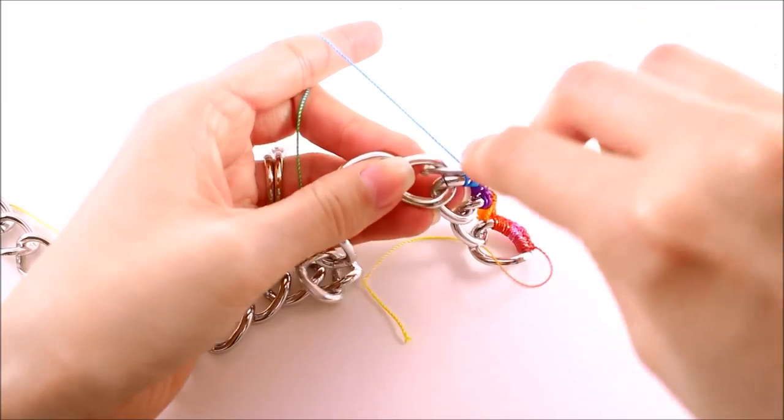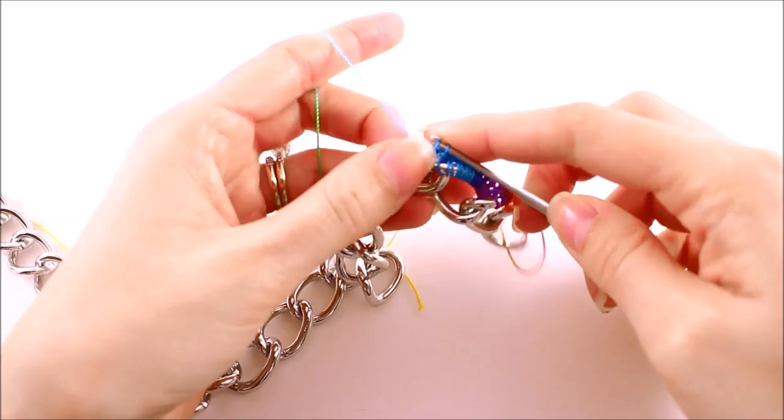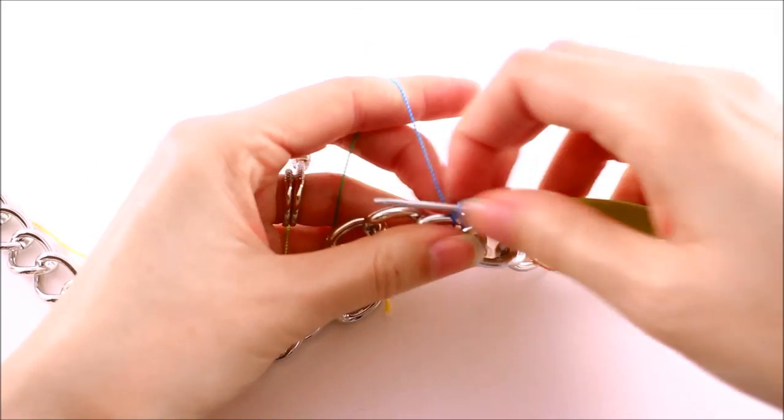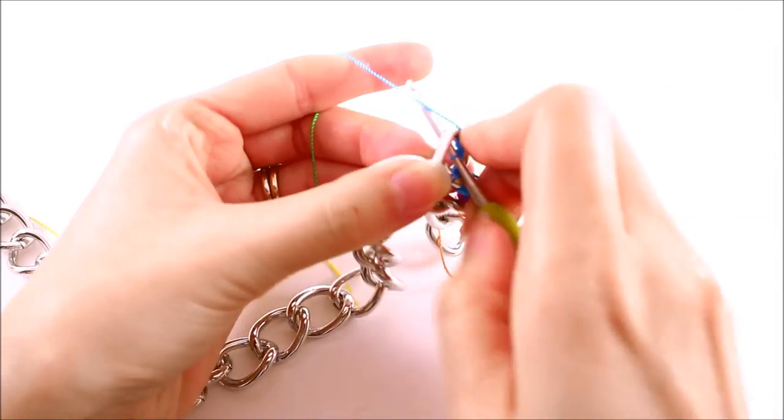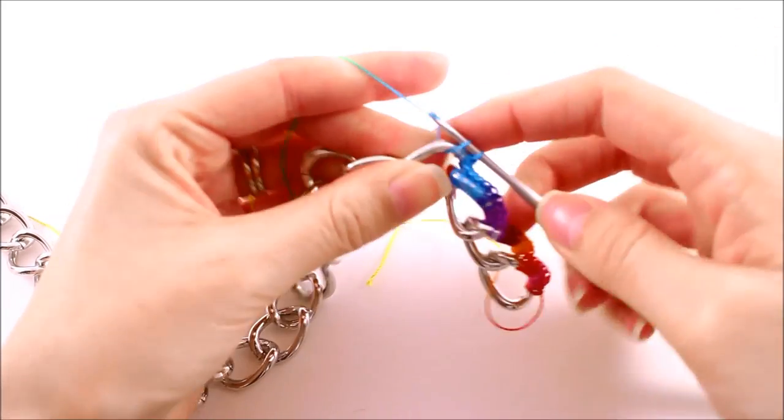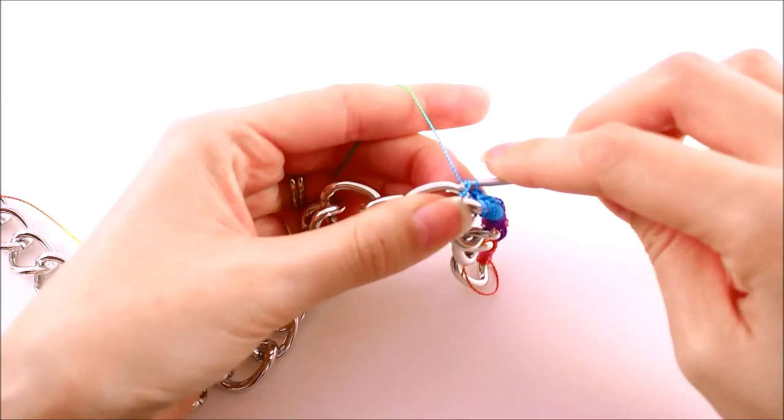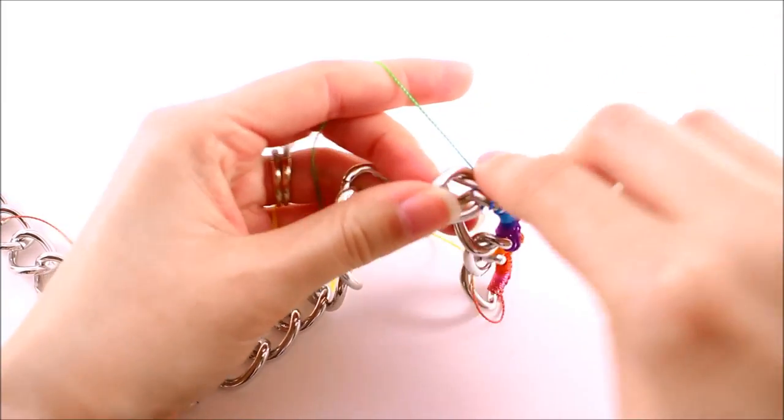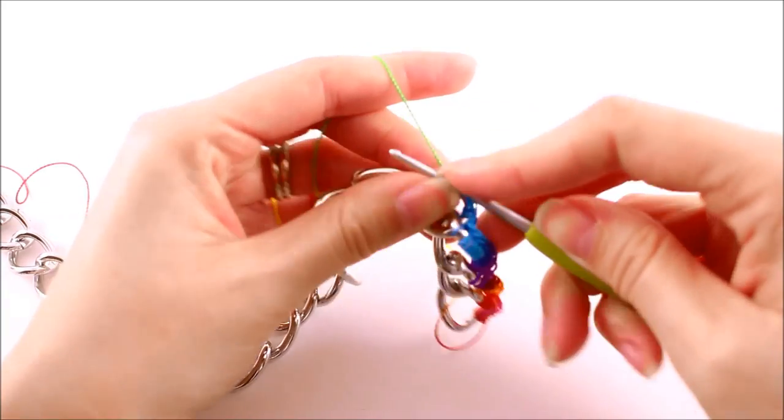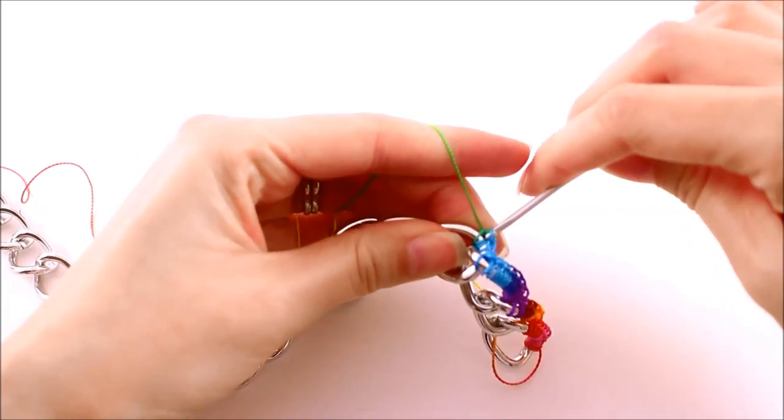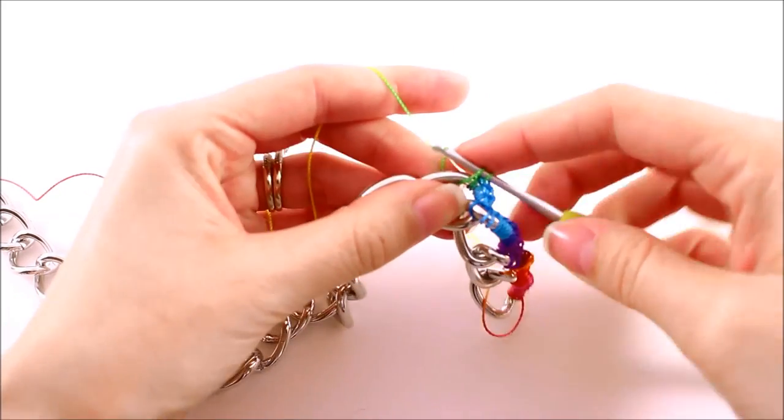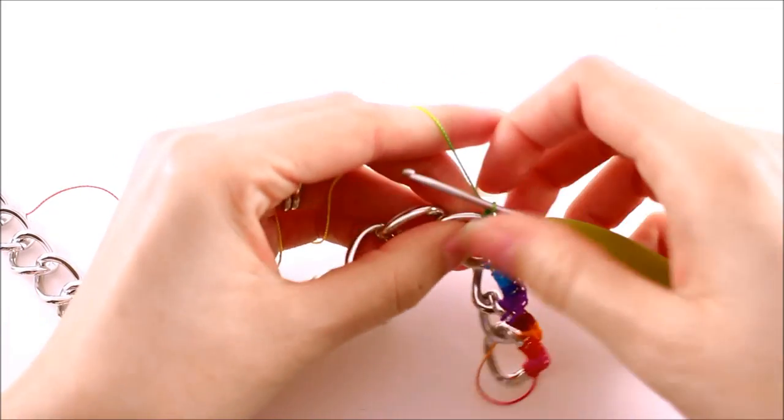Working on the next chain. This is our pattern repeat for this project. As you can see, it's really easy and it actually works up super quick. You can pretty much make your necklace for the evening out in just 30 minutes before you leave. So it's really just that simple. We'll go ahead and make eight single crochets around every one of our chains.